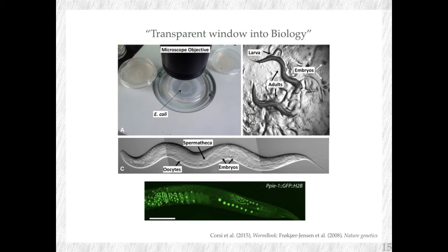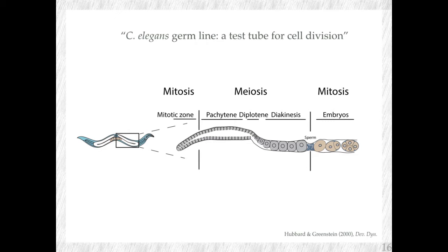C. elegans is very common — you could go to your garden, get some compost, and you would find these guys. They're almost everywhere across the world. And they are see-through, which is great for us as biologists. People have called them a transparent window into biology. You can see all the structures of C. elegans just by looking at them. And with genetic tricks, you can make sure you can look at things even better — here, a protein has been tagged with a fluorophore that we can see, which visualizes the germline where germ cells are produced and embryos. This is where cell division happens, and it's very pronounced in C. elegans.